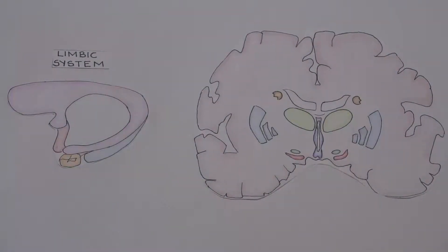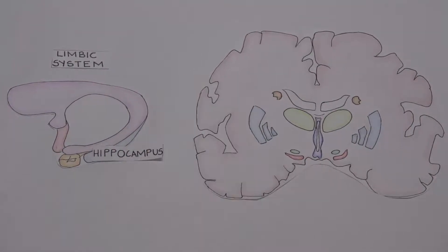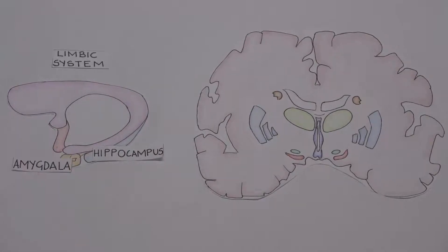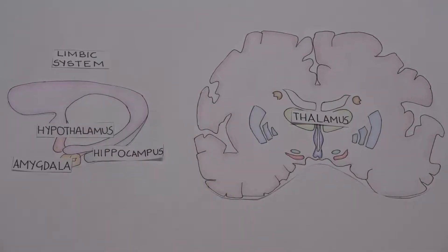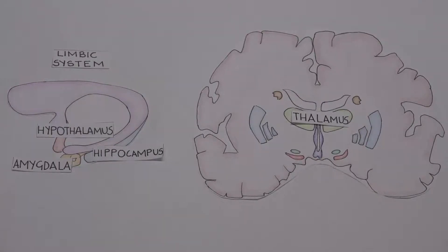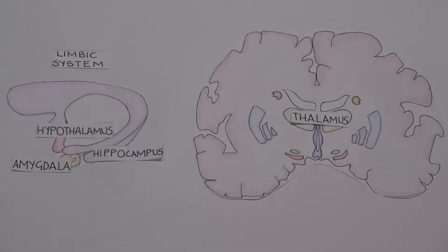The limbic system in the cerebrum is to do with memory and emotions. The hippocampus is associated with memory. The amygdala is associated with emotion. The thalamus, which we can see on the diagram on the right, relays sensory signals to the cerebral cortex, and the hypothalamus is a control centre of the brain which regulates homeostasis in the body. The limbic system is also responsible for reticular formation.